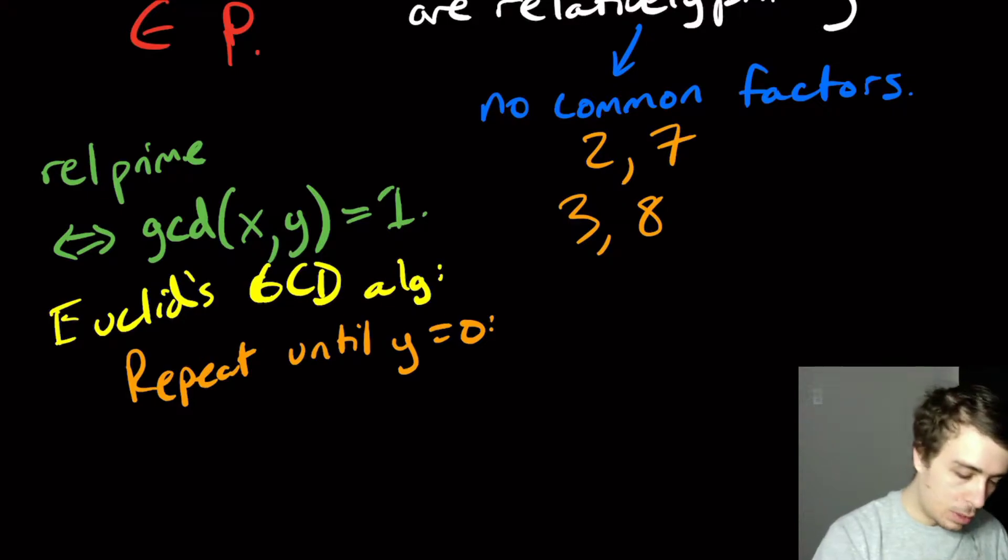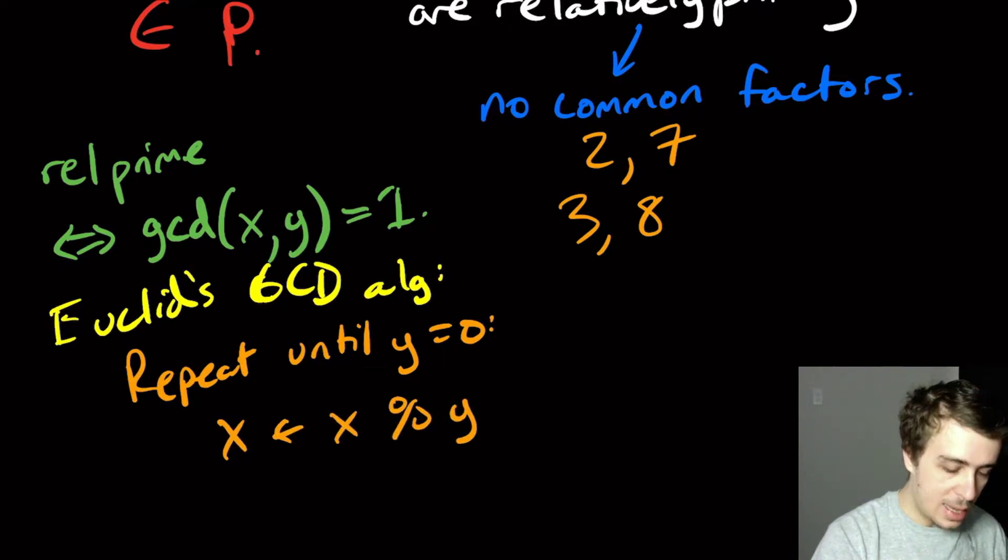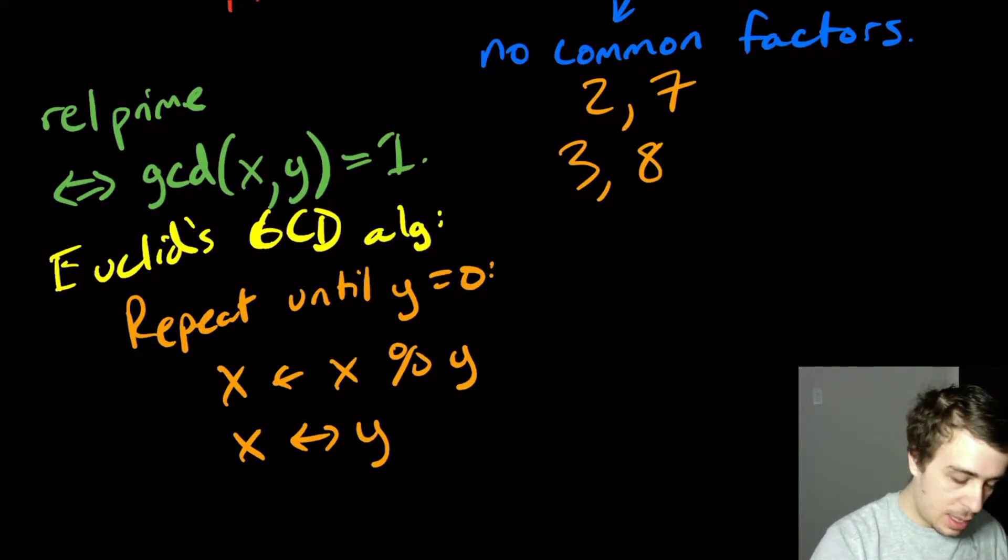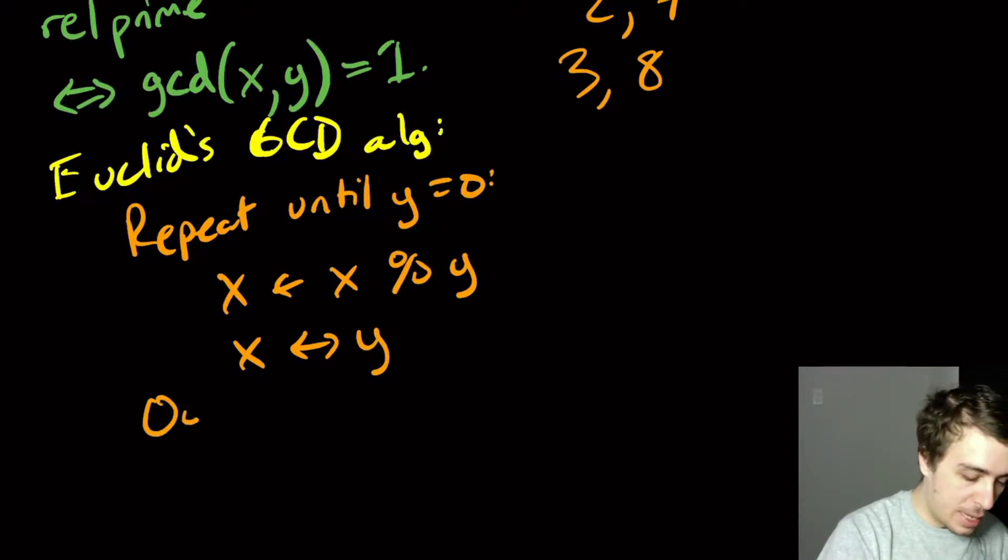So then we're going to say, we're going to save x to be x mod y, and then we're going to trade places between x and y. And then at the very end, we're going to output x.